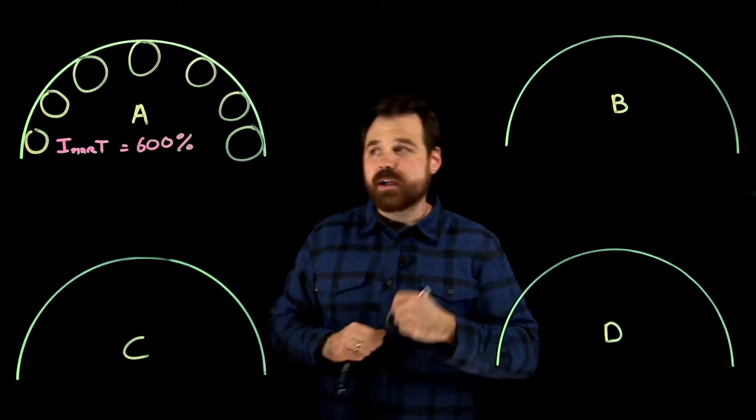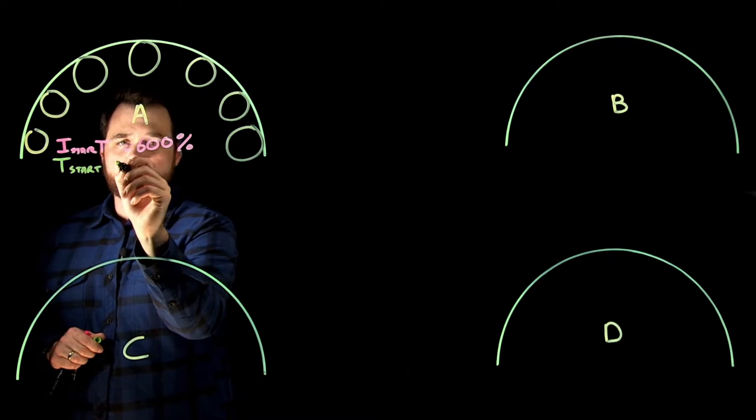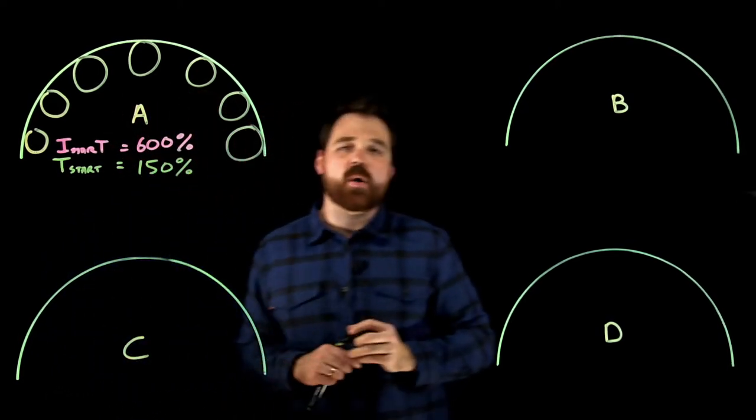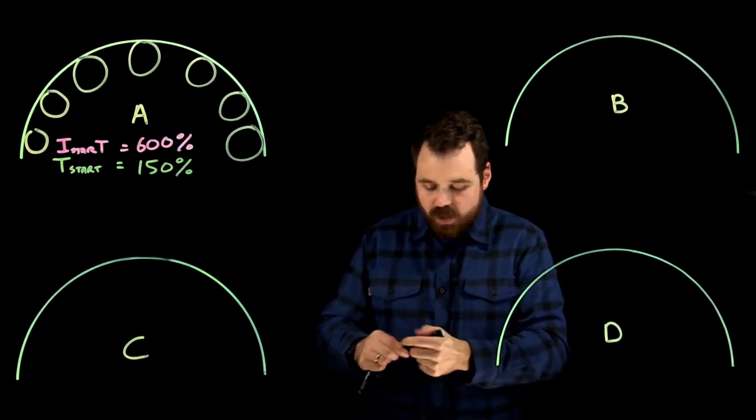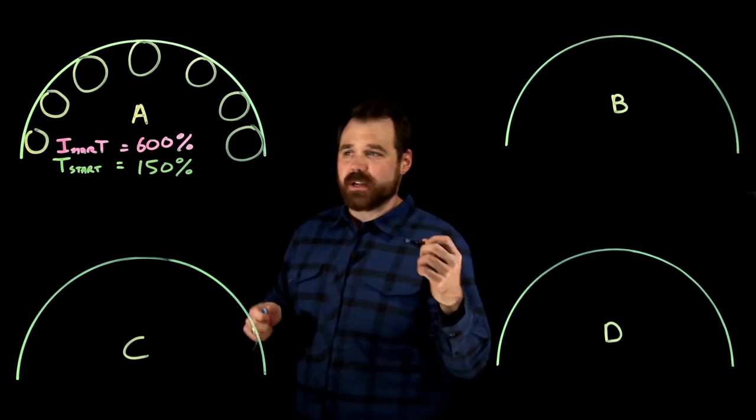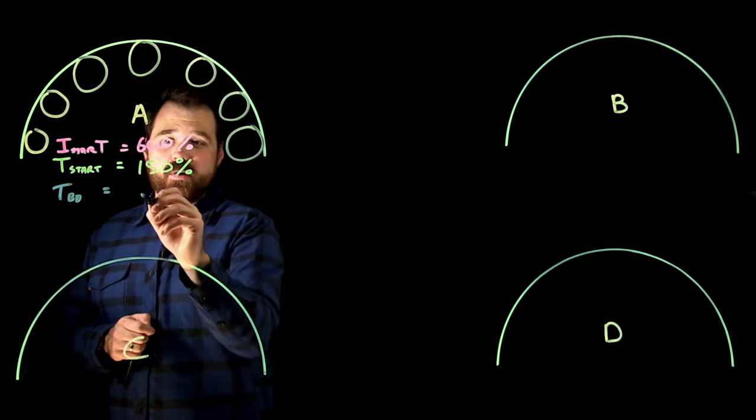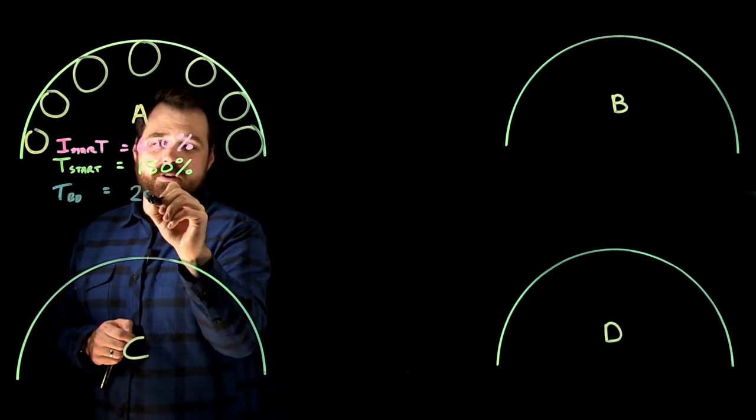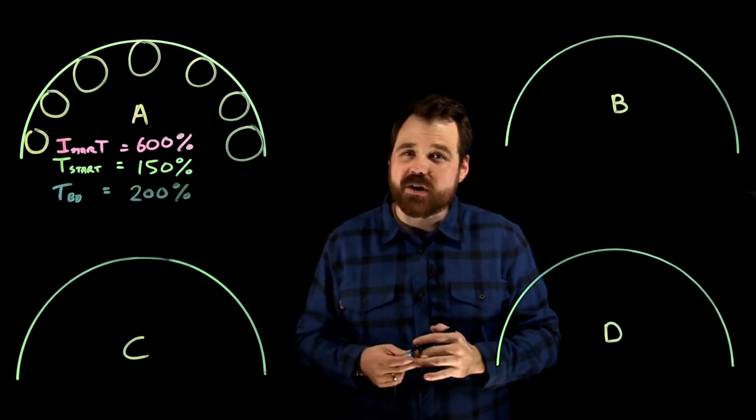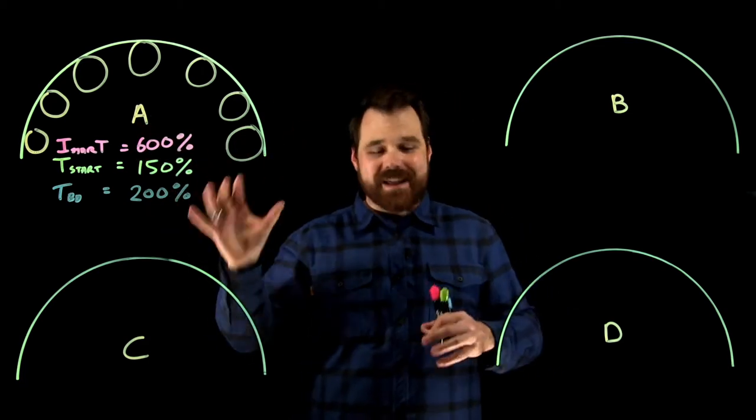What we also get is our torque at start. So our torque at start is about 150% of our full load torque. Now our peak torque or the breakdown torque is what we like to call it. Peak torque, breakdown torque is actually about 200% of the full load torque. And it usually occurs at about 25% slip. So that's a rotor design A.